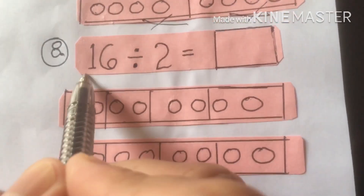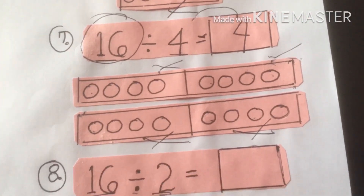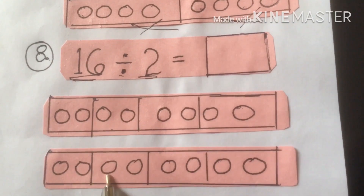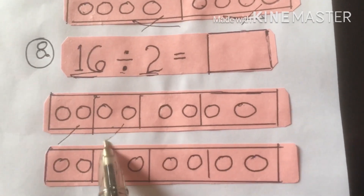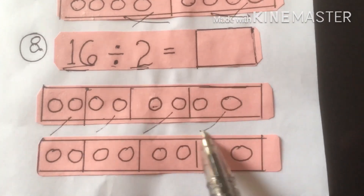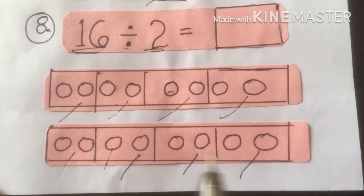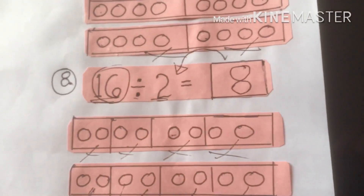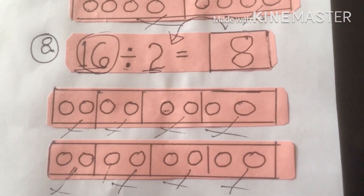Number 8: 16 divided by 2. Same dividend but the divisor is different — it's 2. Same process. Draw 16 beads: 1 through 16. Group by 2: 1–2, mark it, repeat eight times. Count the marks: 1, 2, 3, 4, 5, 6, 7, 8. Write 8. Therefore, 16 divided by 2 equals 8. And 8 times 2 equals 16.